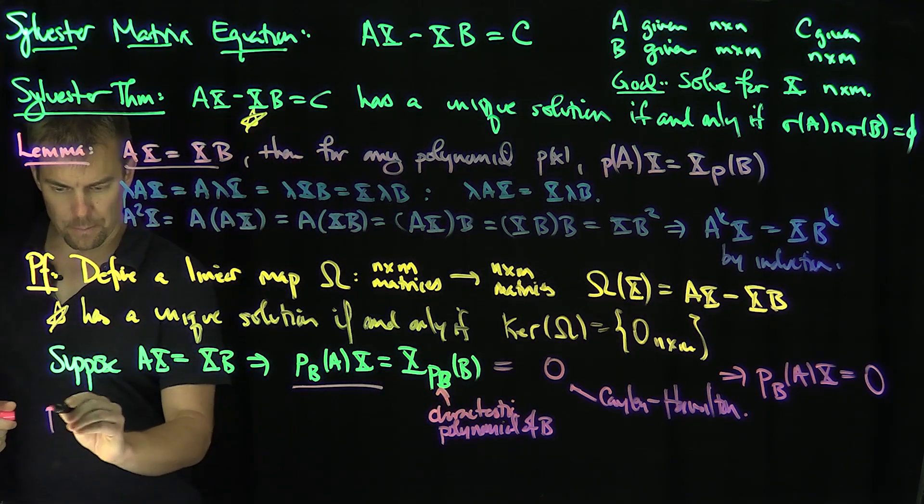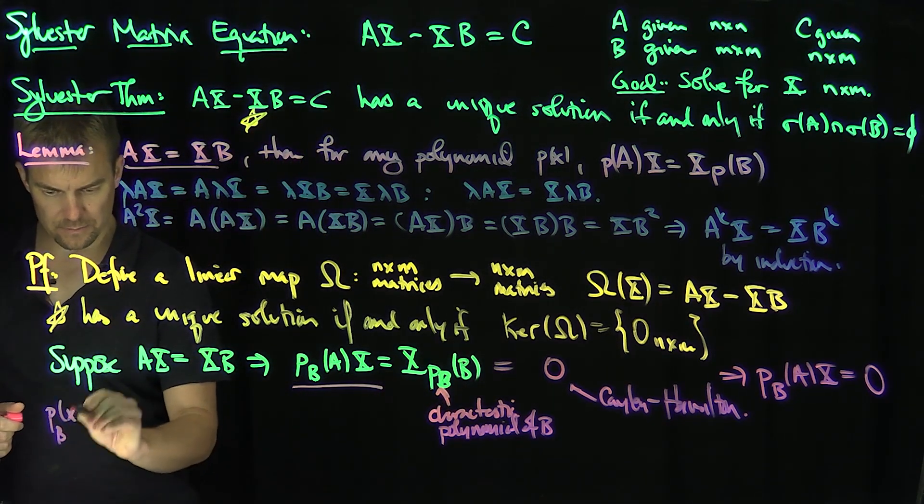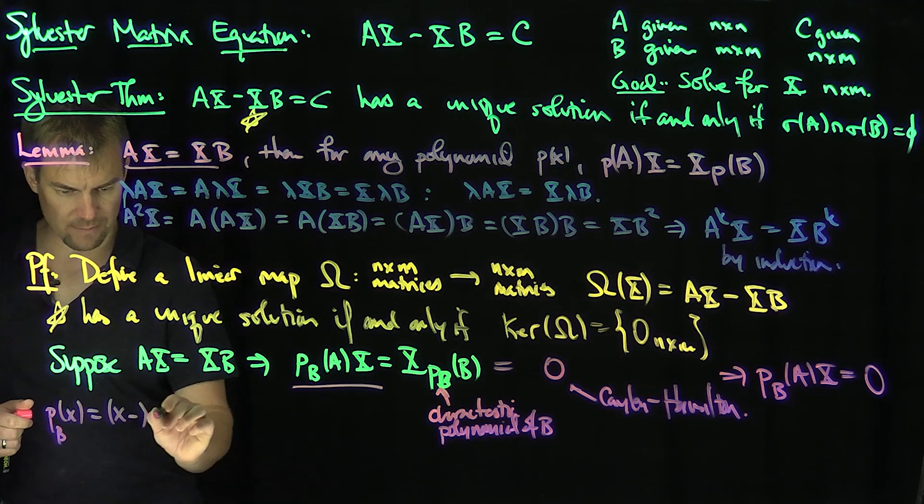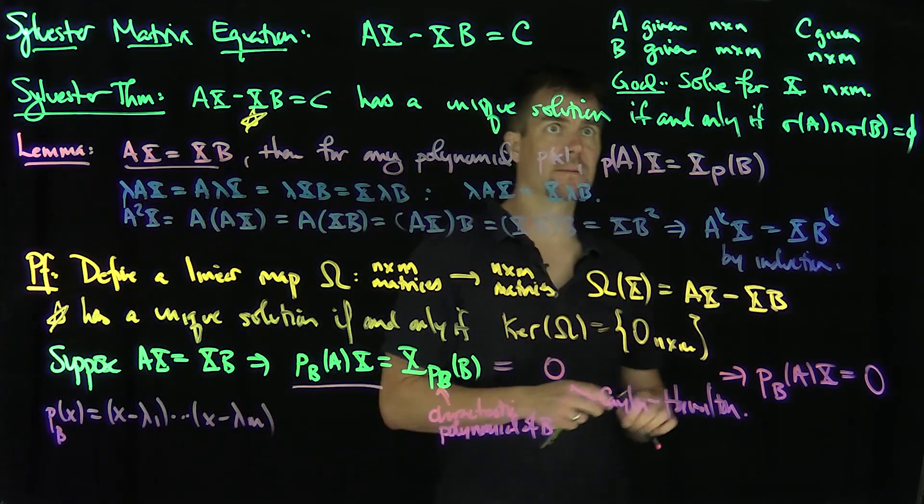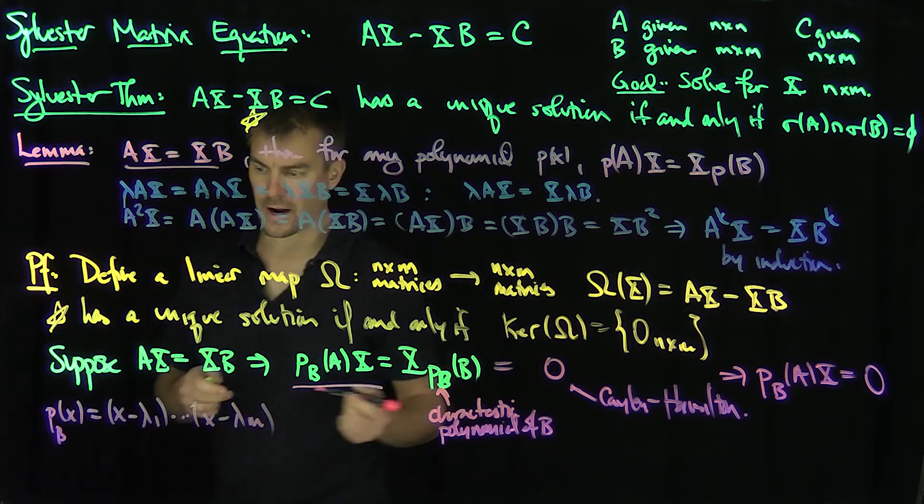If we write out p_B(x) as x minus lambda 1 through x minus lambda m, because B has m eigenvalues, B is m by m. They may repeat.